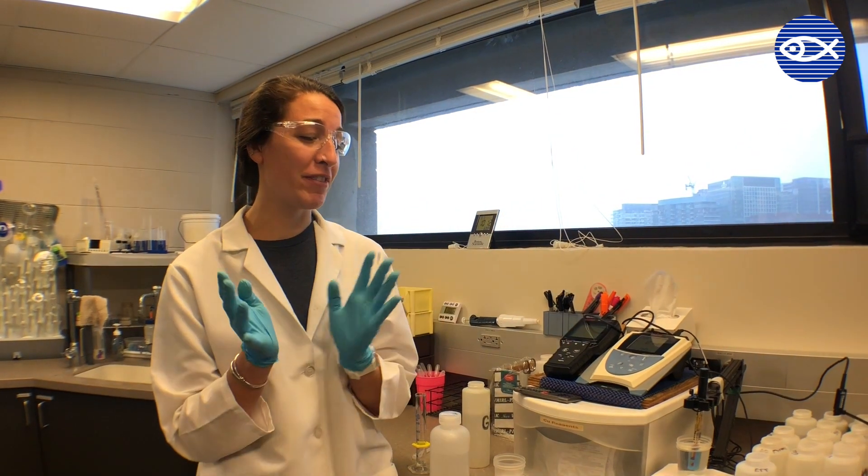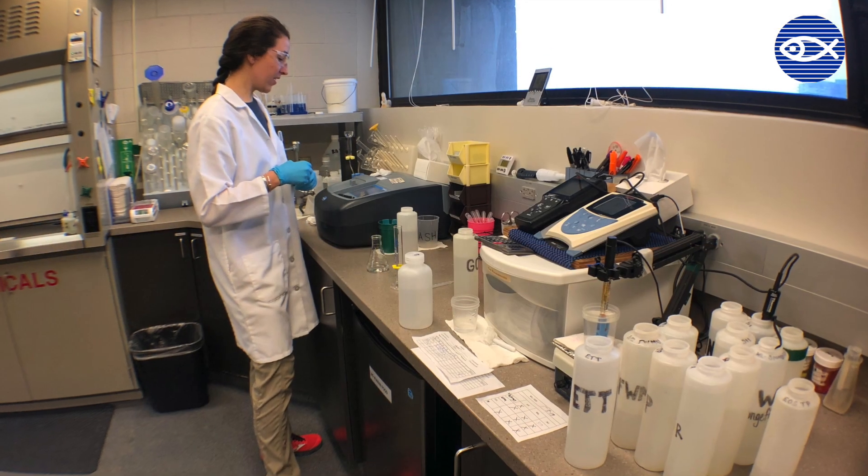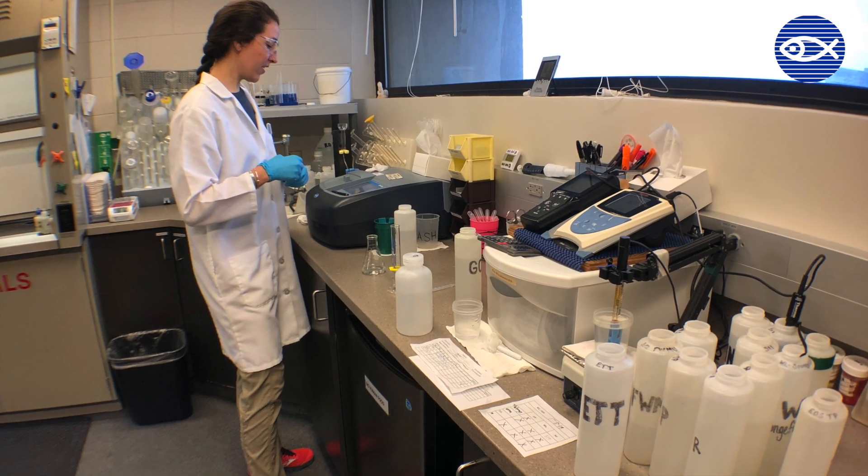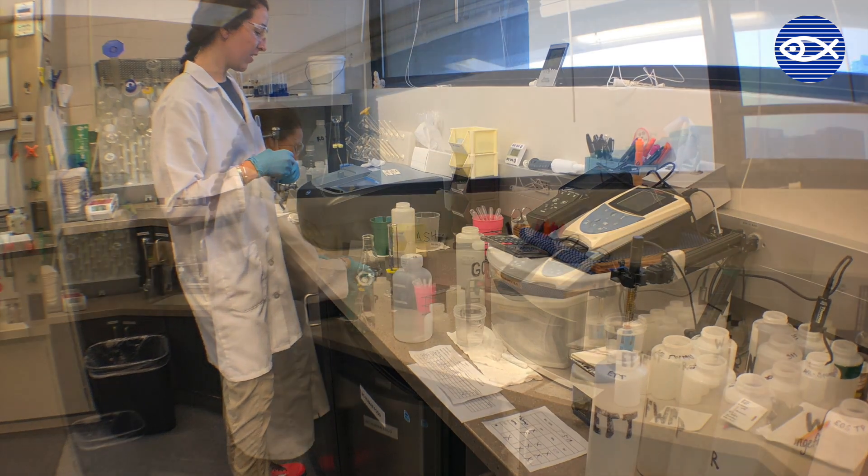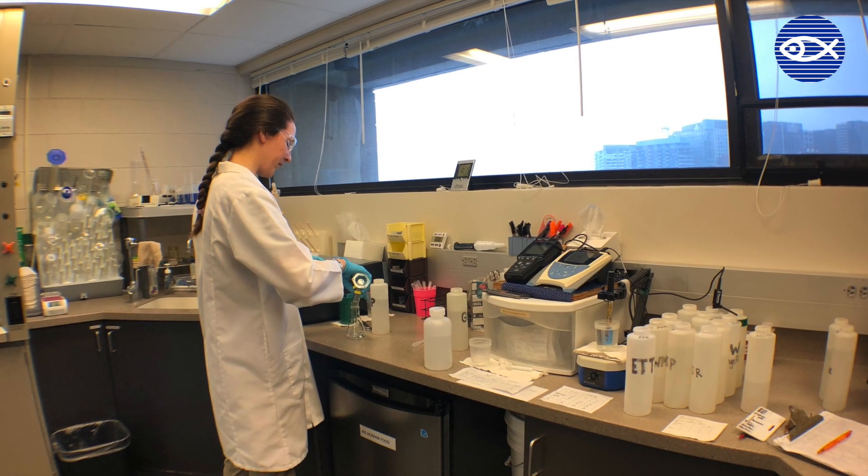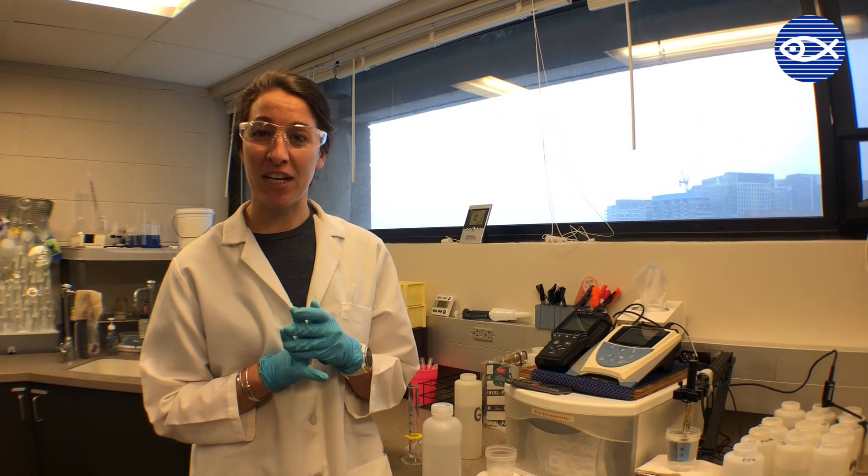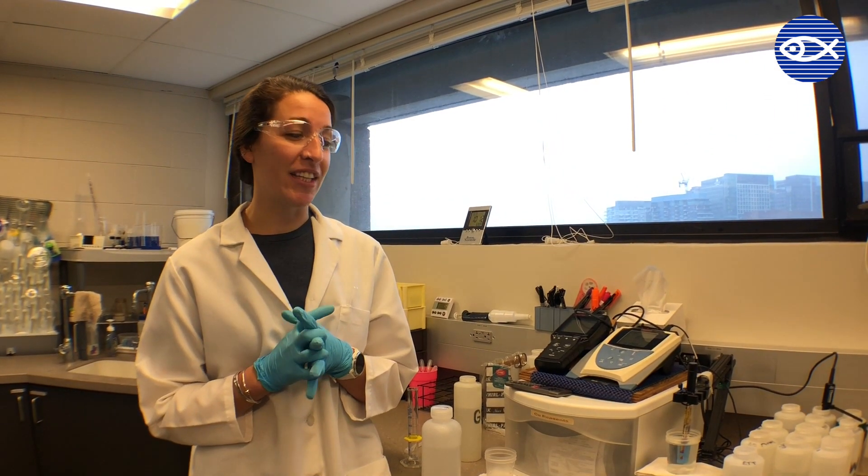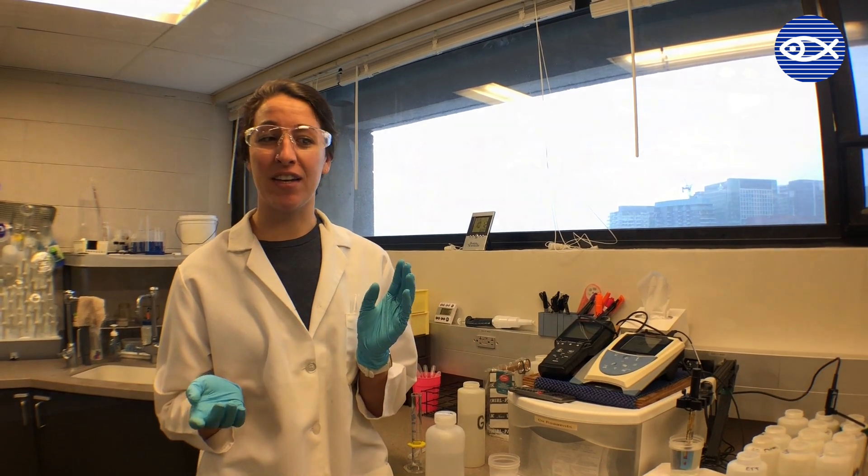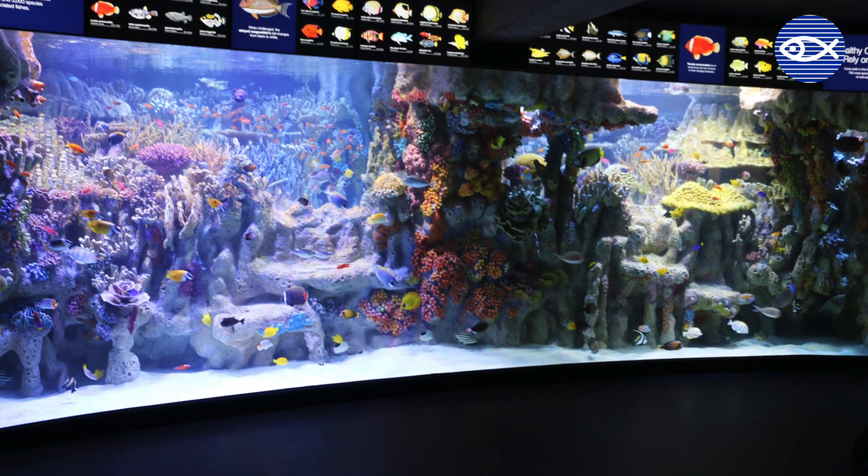We run a multitude of different tests. We usually do pH, salinity, and ammonia checks on every system at least once a week. Then we do all kinds of other things as well. We run nitrites, nitrates, and phosphates. We do alkalinity and calcium tests if the system has live coral in it.